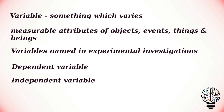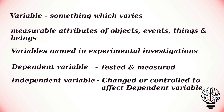The dependent variable is the variable being tested and measured in an experiment, and is dependent on the independent variable. The independent variable is the variable the experimenter changes or controls, and is assumed to have a direct effect on the dependent variable.